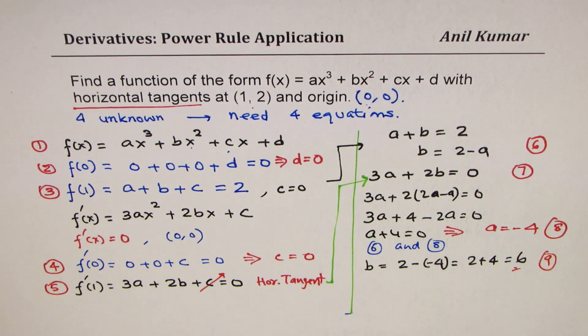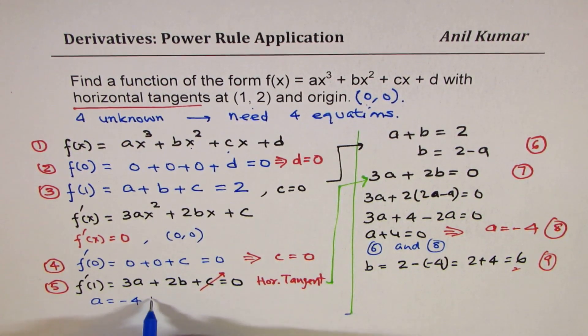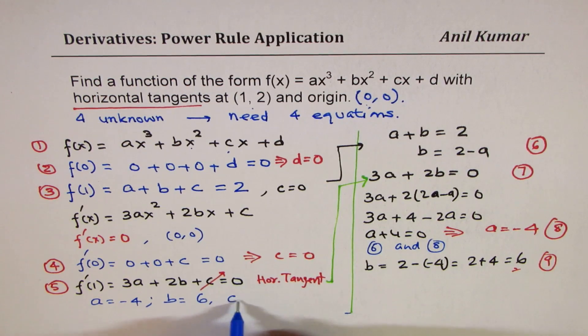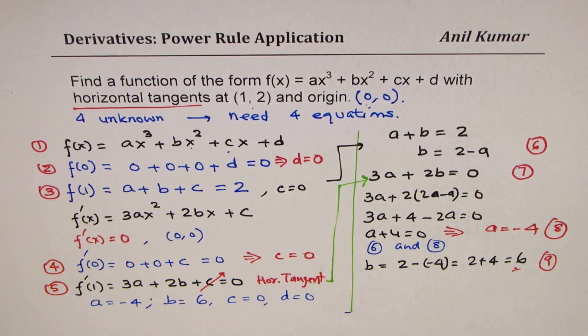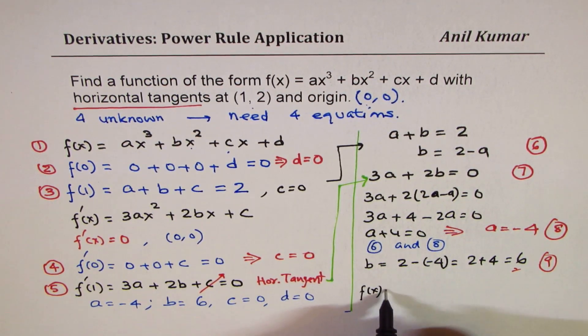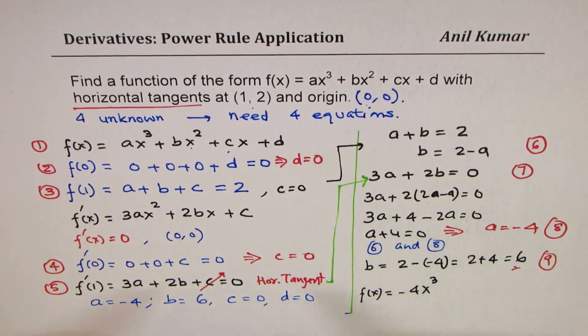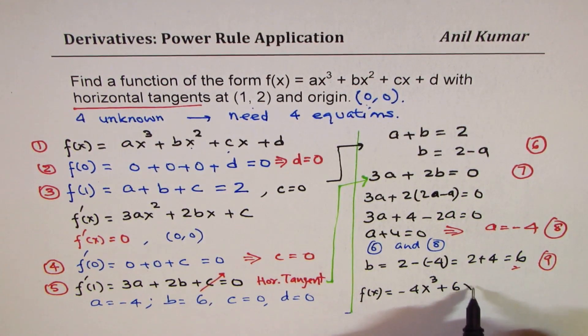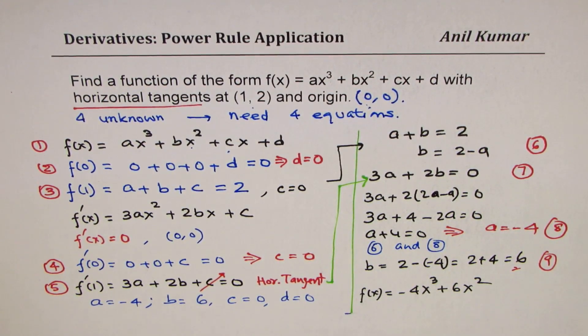So we got all our values now. So what we get finally: a equals to minus 4, b equals to 6, c equals to 0, and d is also equals to 0. And that gives you the function f(x) as equal to minus 4x cubed plus 6x squared. That is the function. So that is how you can actually solve this particular question.